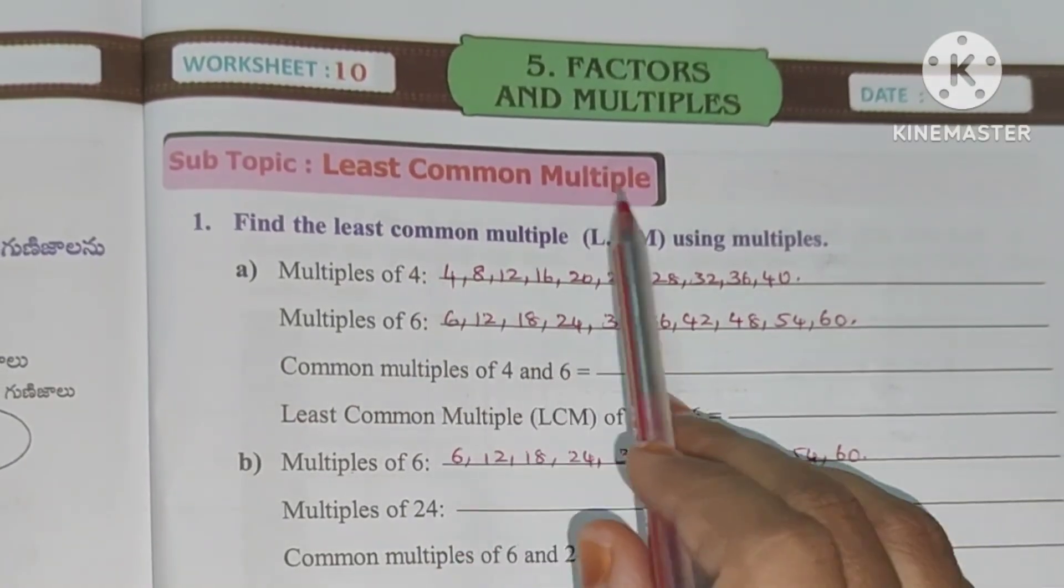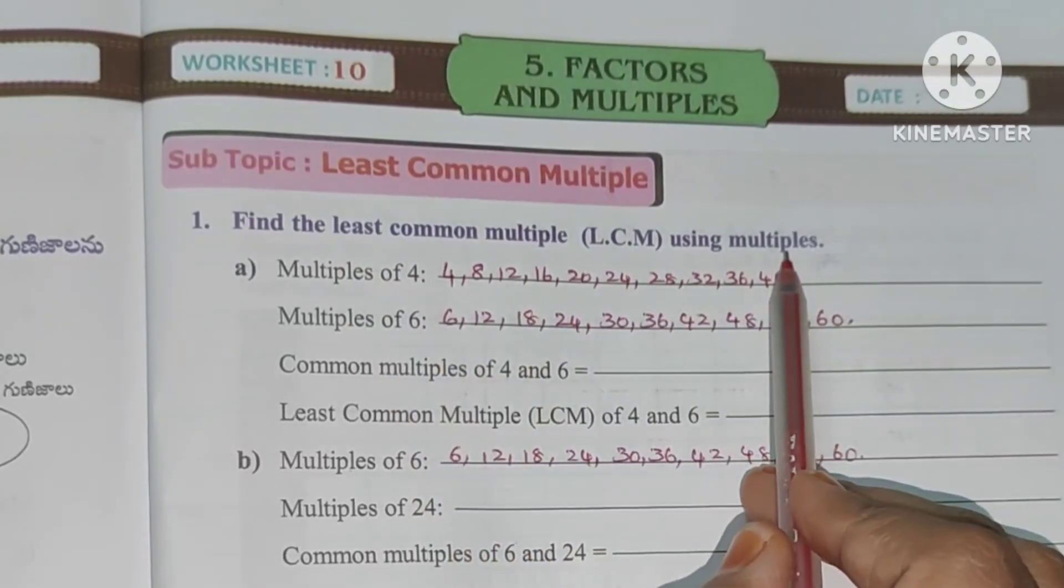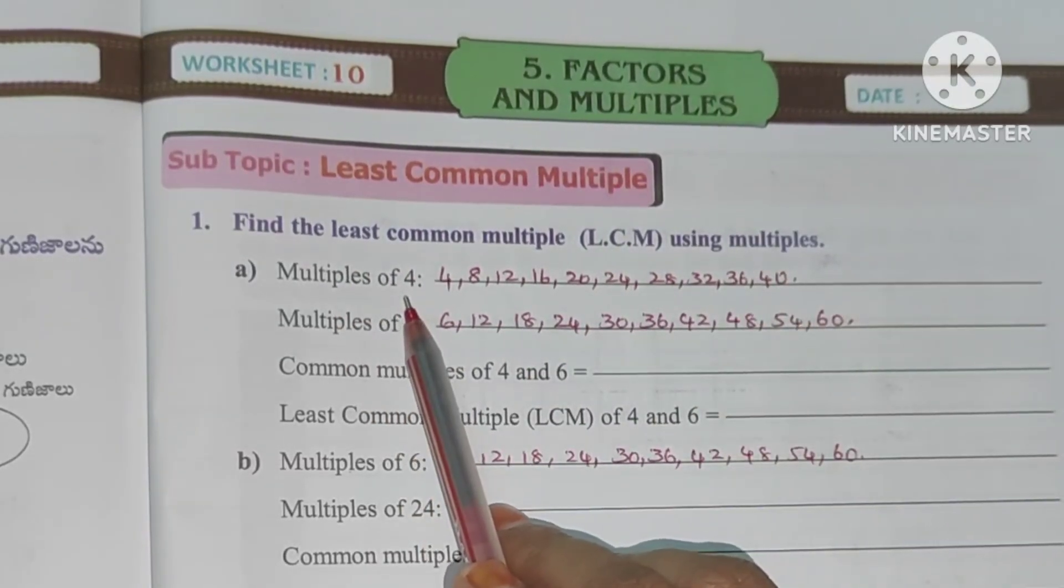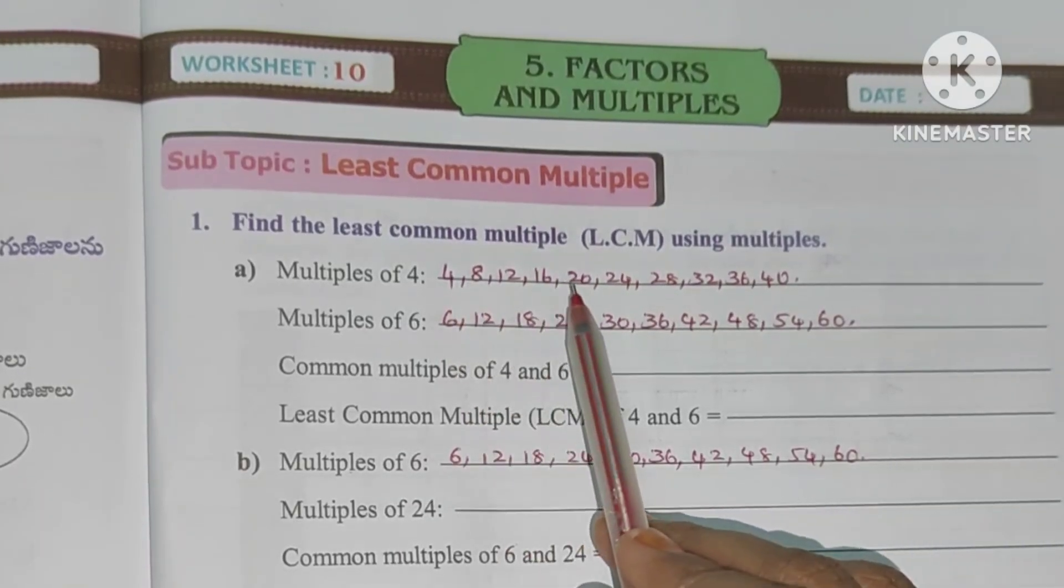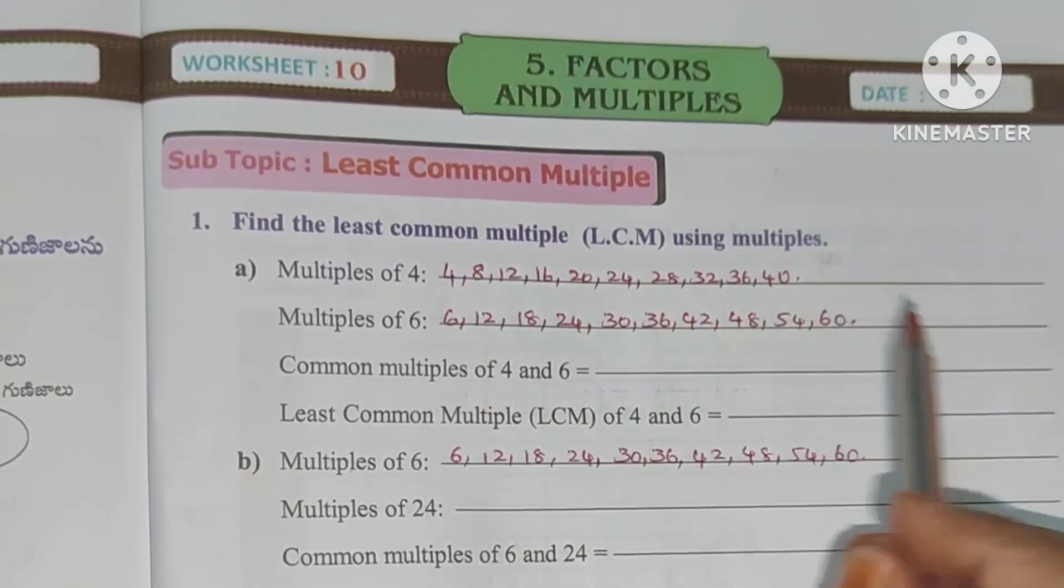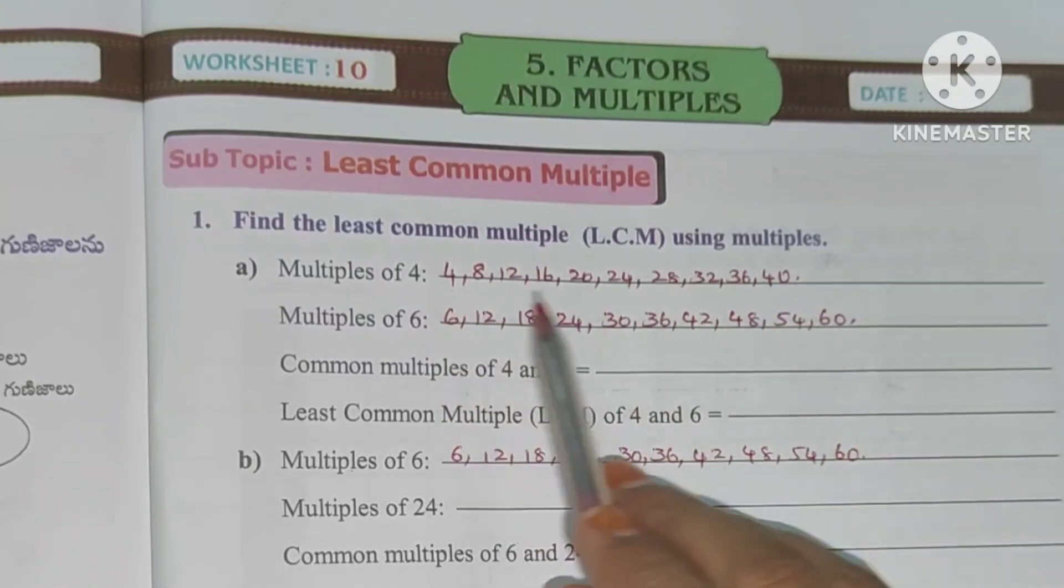Worksheet 10 is least common multiple. Find the least common multiple using multiples. Multiples of 4, I already know that, we need multiples of 10. So 4 tables: